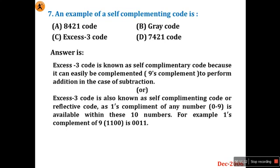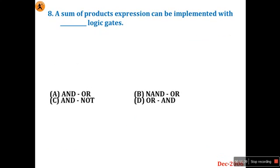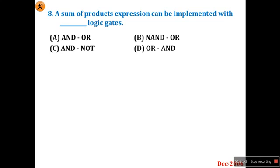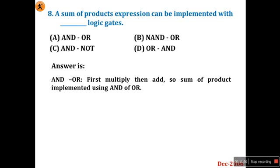Next we'll go for an example of self-complementing code is 8421 code or gray code or XS3 code or 7421 code. Self-complementary code, it is a property. It is a direct answer, that is XS3 code. Option C is right answer.